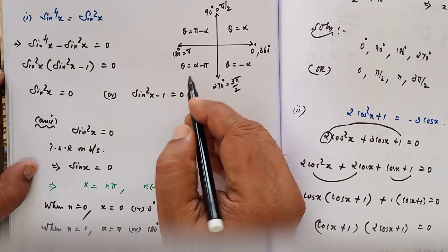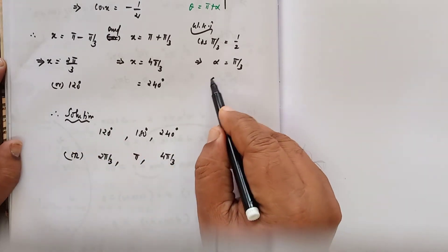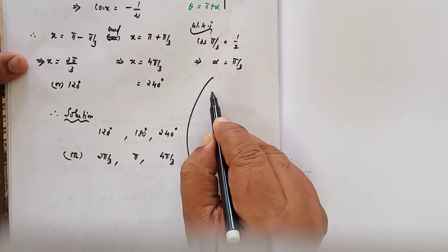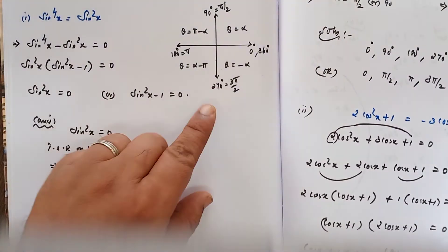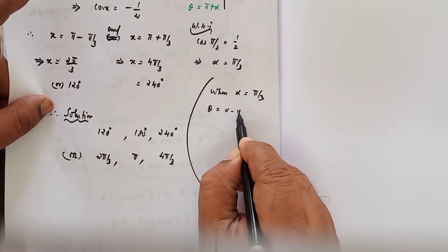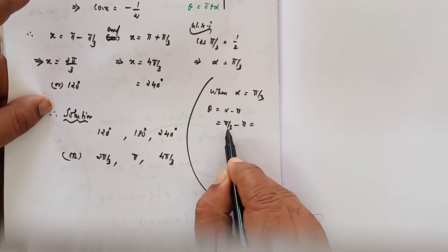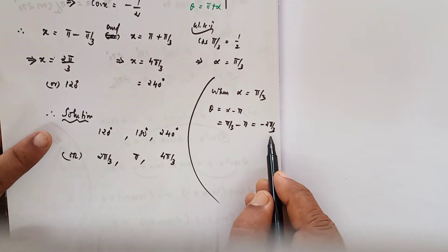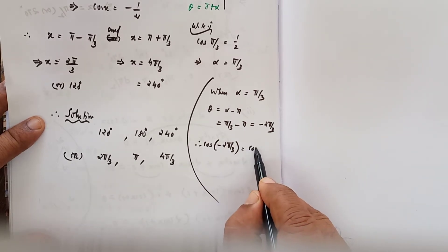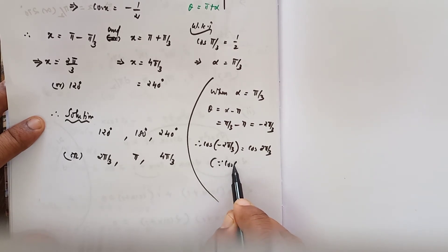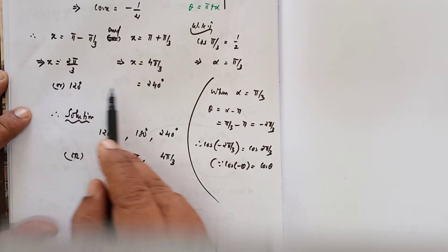Note: you may ask why we use theta equals π plus alpha in the third quadrant instead of alpha minus π. If we use alpha minus π with alpha equals π/3, we get π/3 minus π equals minus 2π/3. But cos(minus 2π/3) equals cos(2π/3) since cosine is an even function, giving the same angle 120°. So for 0° to 360° anticlockwise direction, use π plus alpha to get the positive angle.